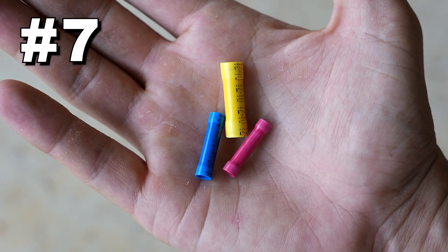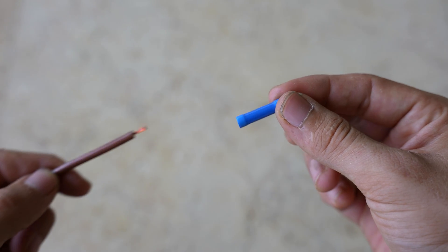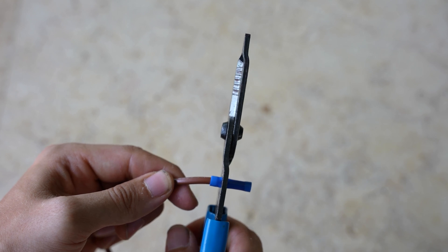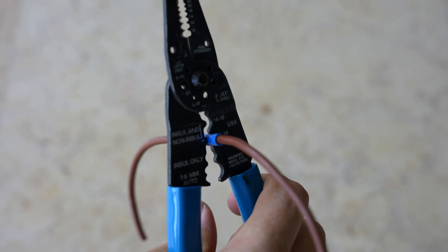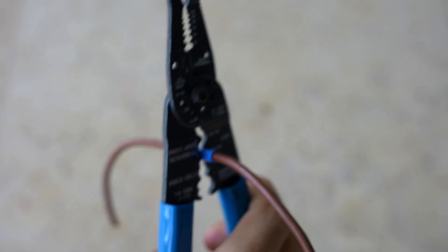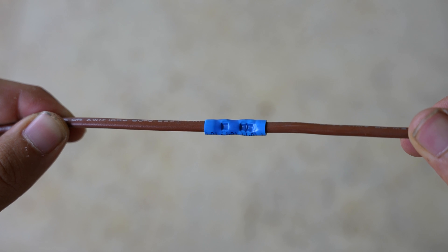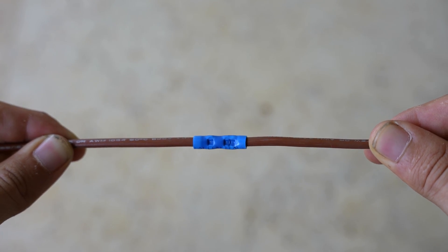Method seven is crimp-on butt connectors. These connectors have a metal tube inside of them that gets crimped down on the wires and holds them in place. Make sure the wires are crimped securely, because loose connections can cause the wire to melt and burn. This right here is why it's a good idea to do a tug test every time. Normally, if this happens, you would use a new connector, but crimping it closer to the end did the trick for me.